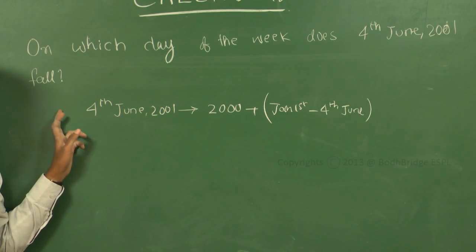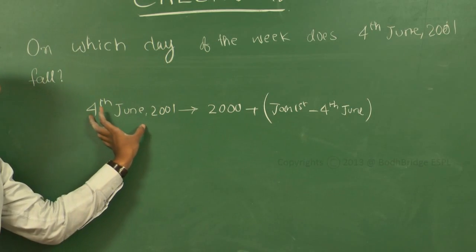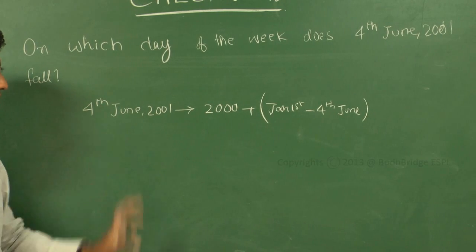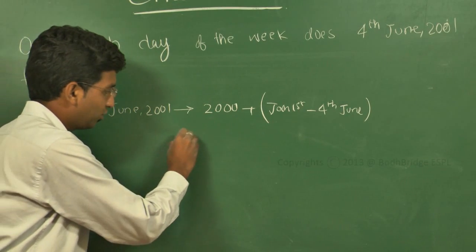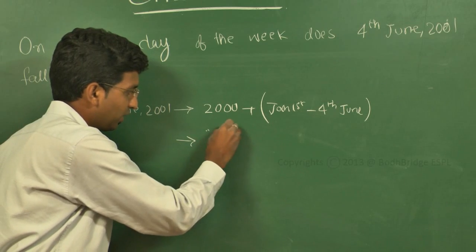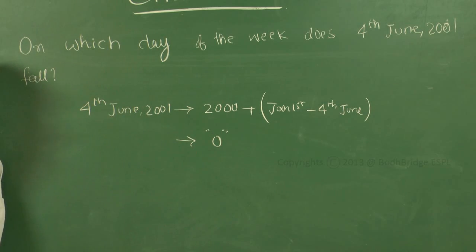We know that 2000 years will have zero odd days. From previous concepts, we've already shown that 400 and multiples of 400 years have only zero odd days. So 400, 800, 1200, 1600 will have zero odd days. Similarly, 2000 years will have only zero odd days.